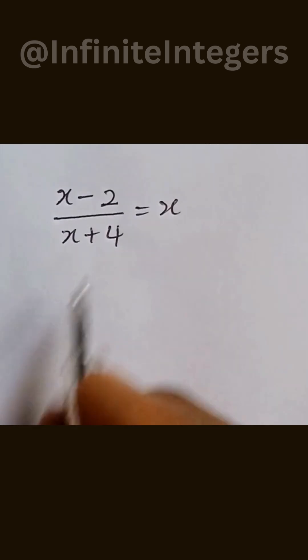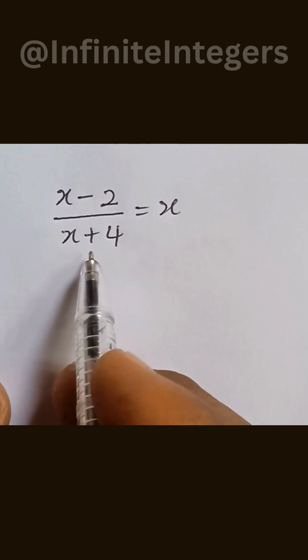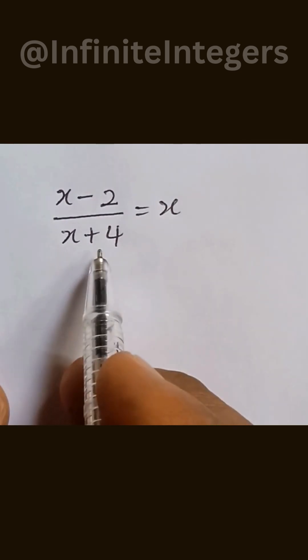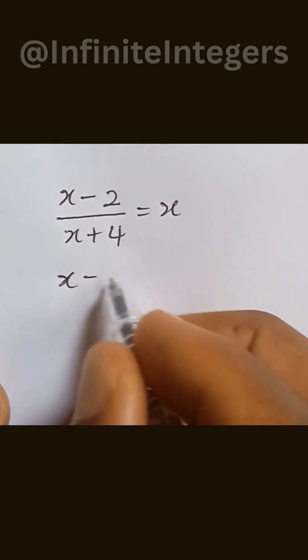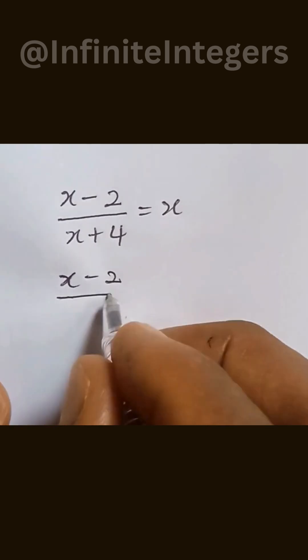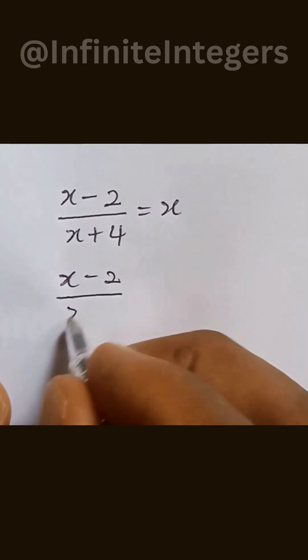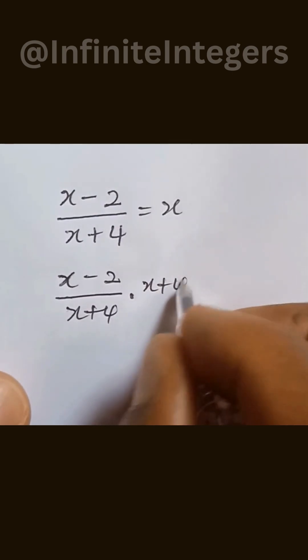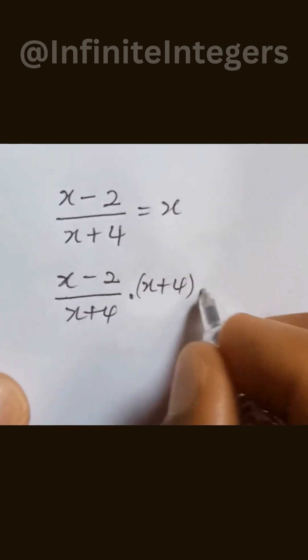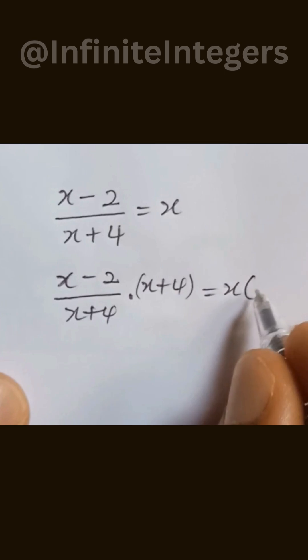Let's solve this together. The first thing here is to multiply both sides with what we have at the denominator. So we have x minus 2 over x plus 4 multiplied by x plus 4 equal to x multiplied by x plus 4.